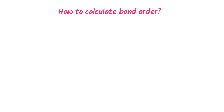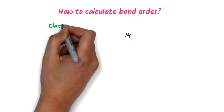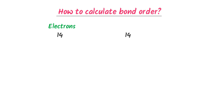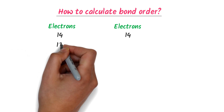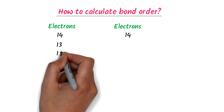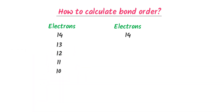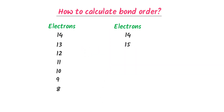Firstly, I write 14 here and also 14 there. This is the column of number of electrons, and this is also the column of number of electrons. Here, I go in descending order: 13, 12, 11, 10, 9, 8. While there, I go in ascending order: 15, 16, 17, 18, 19, 20.